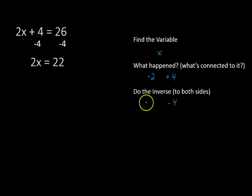Now we're going to undo that by dividing both sides by 2, which gives us our final answer of x is equal to 11. Notice we're following those same steps every time.